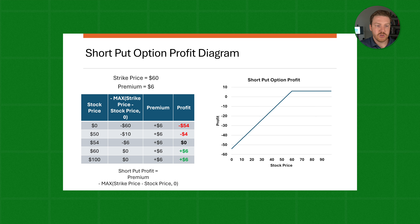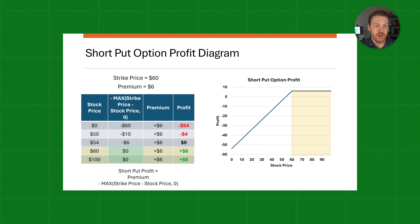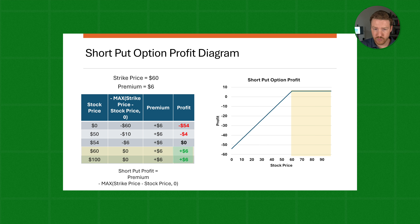Once we get up to $60, we basically will not have this contract exercised against us at all. So that exercising option value — the max of strike price minus stock price or zero — will just be zero for any value of $60 or above. We will always have received our $6 premium. So our max profit will be reached at $60, and at any higher price we'll just profit $6. Our upside is limited on this short put.